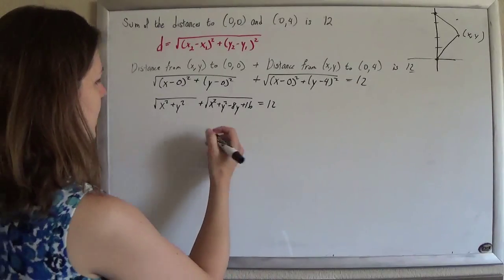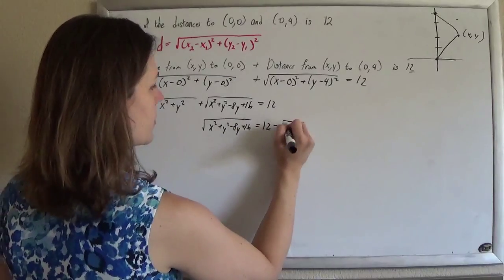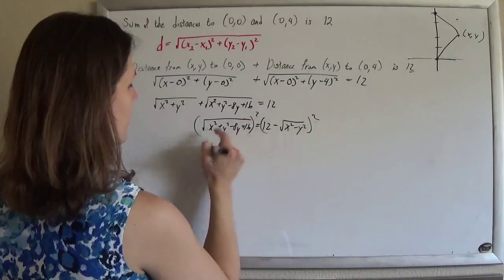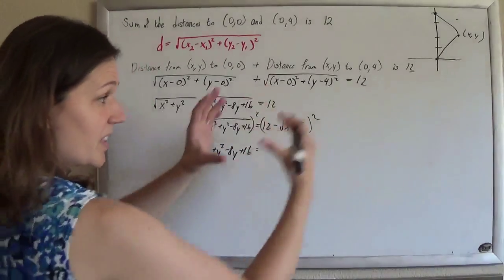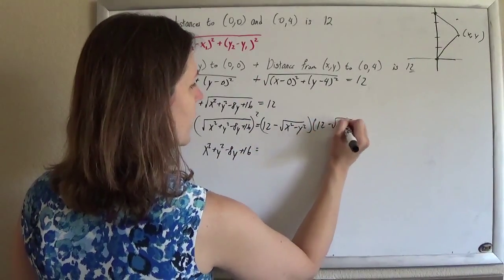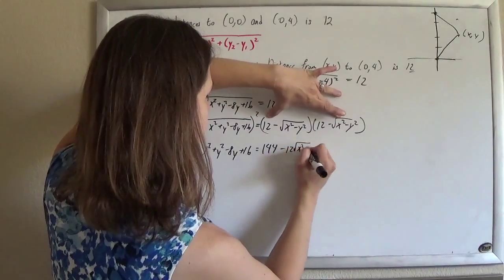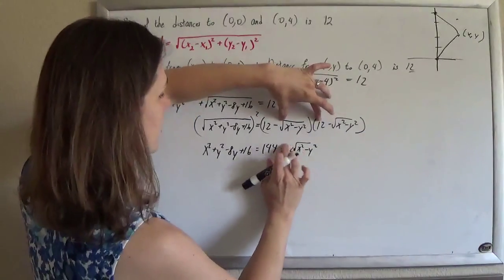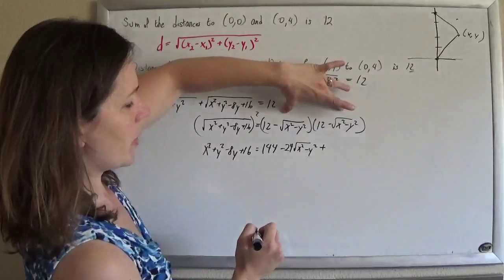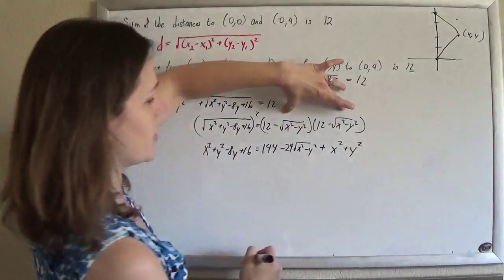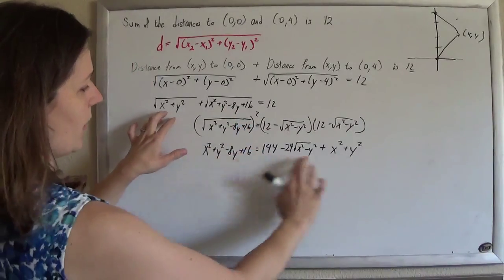I want to get rid of the square roots, and it's going to be a little nicer if I kick one term over. So I have 12 minus the square root of x² + y² equals the square root of x² + y² − 8y + 16. Now when I square both sides, this square root cancels out and I just get the inside. The left side foils out to 144 minus 24 times the square root of x² + y², plus x² + y².